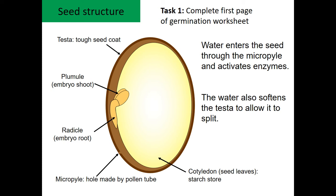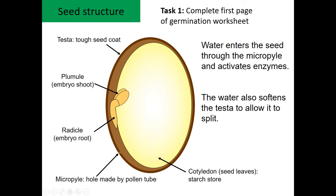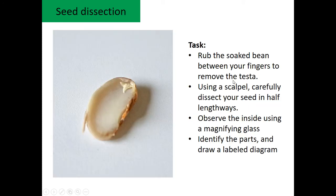Looking back at the seed structure, you're going to have a look firstly at completing a germination worksheet. There's a tough seed coat called the testa. Water enters through the micropyle and activates the enzymes, telling the plant it's ready to germinate. Then we get the embryo shoot being produced — the radicle is the embryo root. There is also a starch store, which is used to give the plant energy to grow before it can photosynthesize.